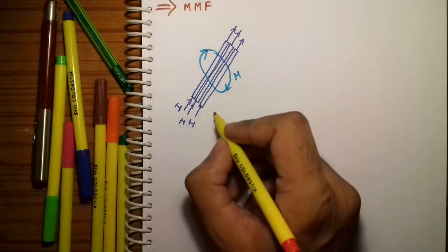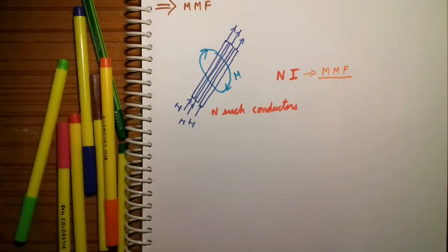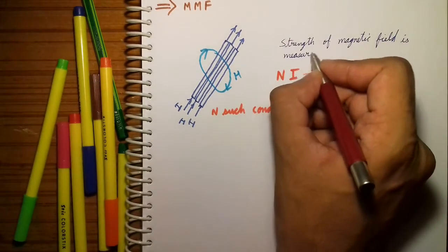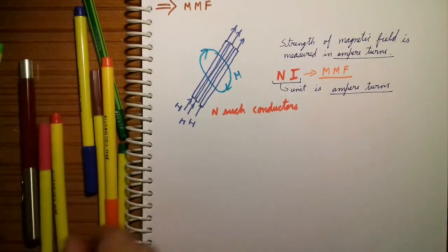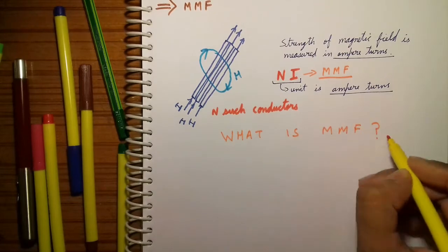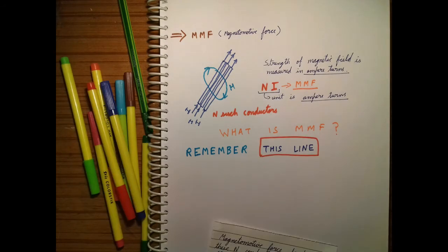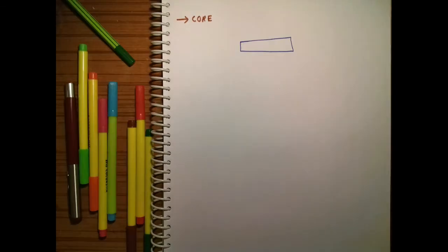To measure the strength of this magnetic field, we need to have some quantity, some unit — that is called MMF. Its unit is Ampere-turns. Now the question remains: what is MMF? Just remember this: MMF drives the flux in the core.